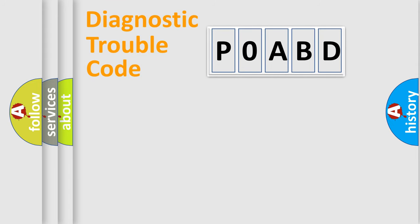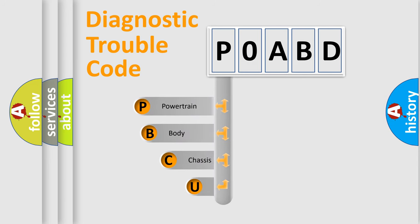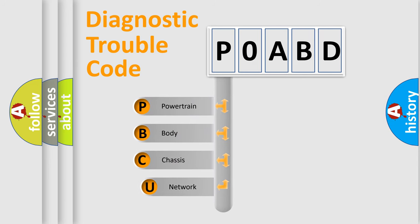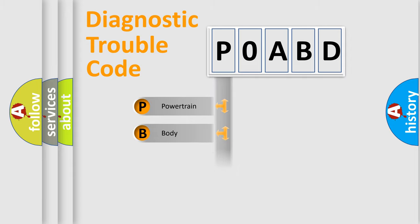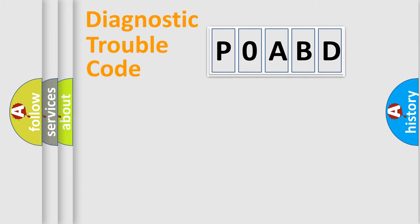First, let's look at the history of diagnostic fault code composition according to the OBD2 protocol, which is unified for all automakers since 2000. We divide the electric system of an automobile into four basic units: Powertrain, Body, Chassis, and Network. This distribution is defined in the first character of the code.